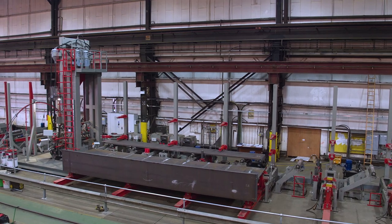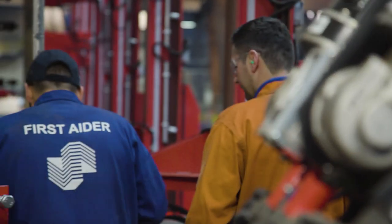The T&I line here at Severfield's Loftstock facility is a fully automated production line that produces plate girders and box sections.